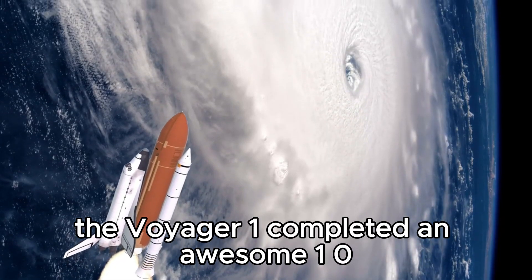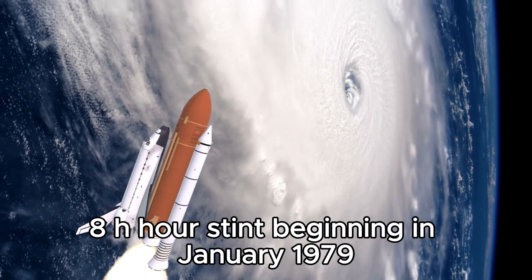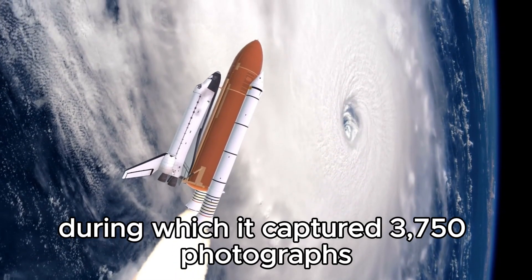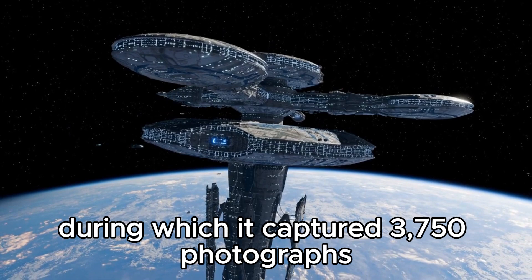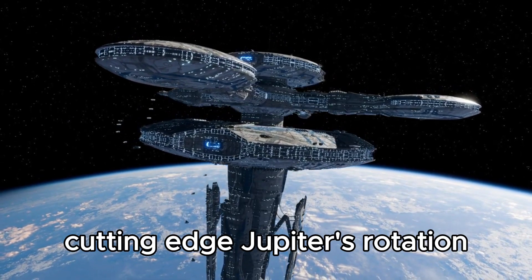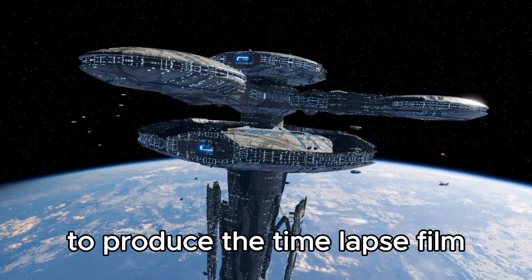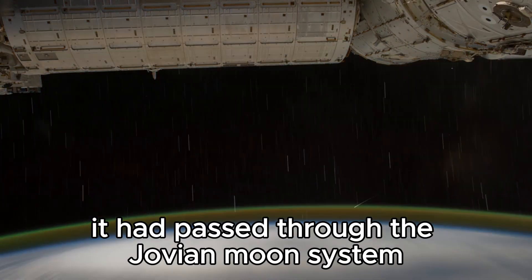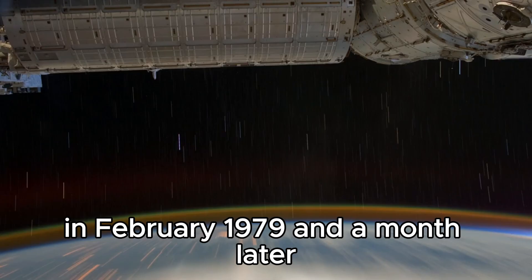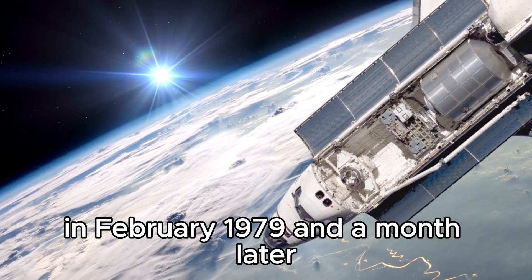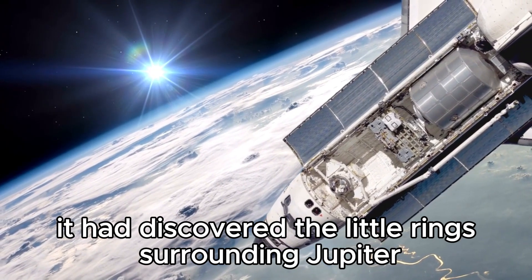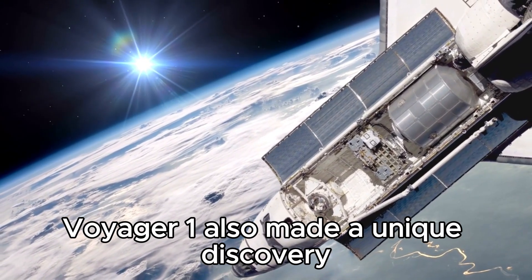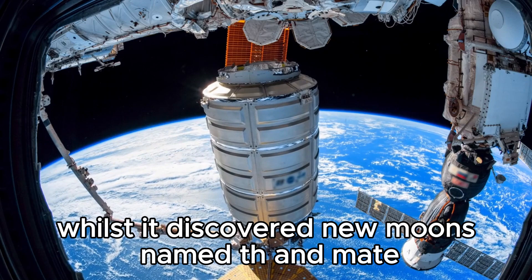Voyager 1 completed an awesome 108-hour stint beginning in January 1979, during which it captured 3,750 photographs of Jupiter's rotation to produce a time-lapse film displaying 10 of the planet's spins. It had passed through the Jovian moon system in February 1979, and a month later it discovered the thin rings surrounding Jupiter. Voyager 1 also made a unique discovery when it found new moons named Thebe and Metis.